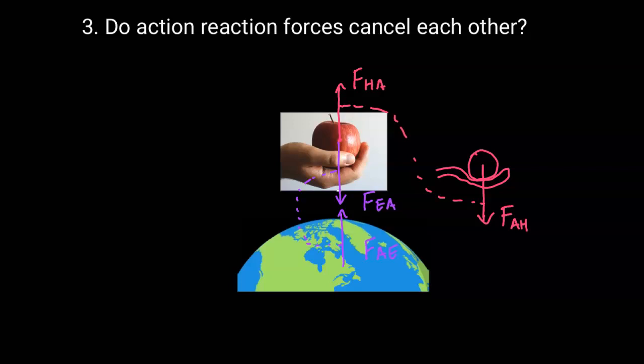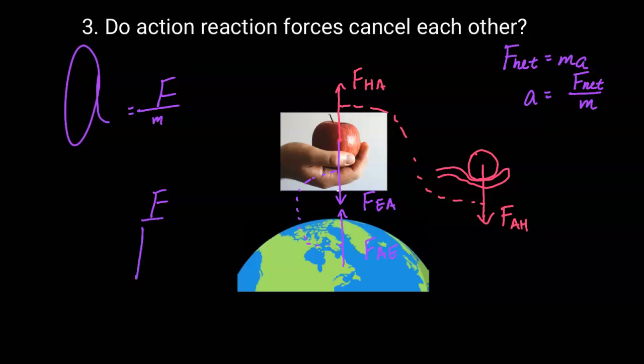Someone might wonder: does the apple actually pull up the earth? If we let go of the apple, we see it fall, but we don't see the earth moving upward. We need to think about Newton's second law: F_net = ma, or a = F_net / m. Greater force means greater acceleration; greater mass means smaller acceleration. Both the apple and the earth experience the same gravitational force F, but the apple has a much smaller mass and so has a large acceleration.